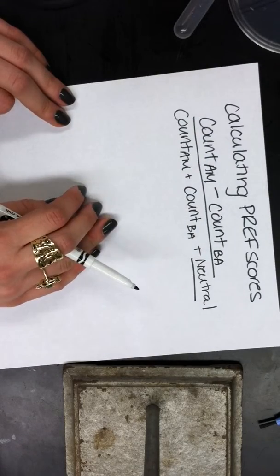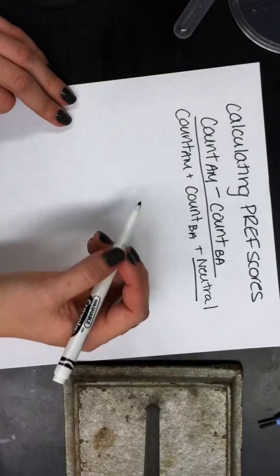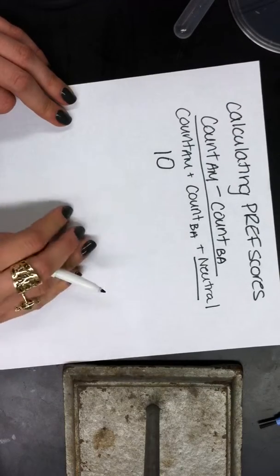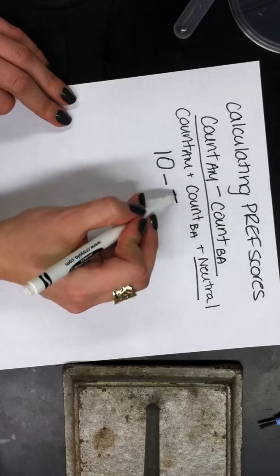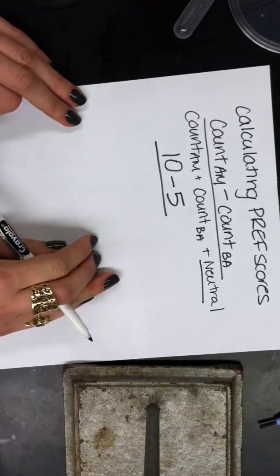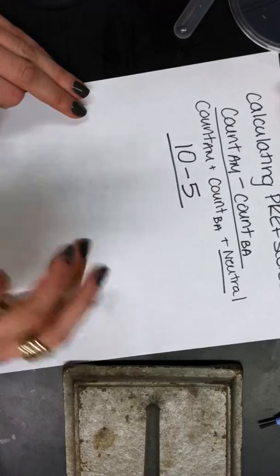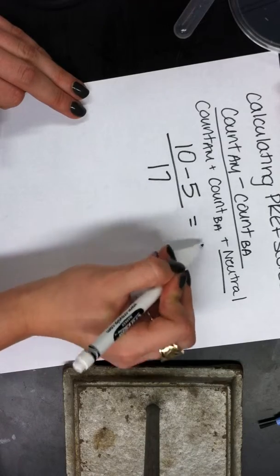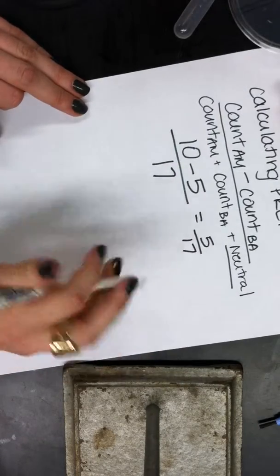So let's say we counted the amount of larva and you found 10 on the AM side minus 5 on the BA side and there were two larva left over in the middle, you'd have 17, 5 17ths would be your preference score.